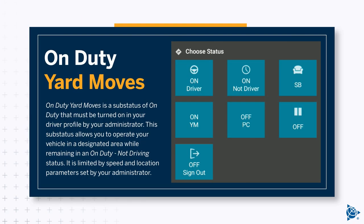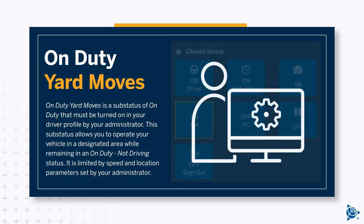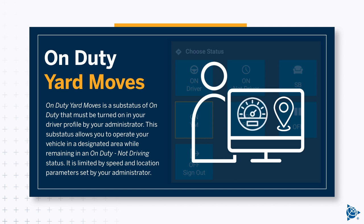On-duty yard moves is a sub-status of on-duty that must be turned on in your driver profile by your administrator. This sub-status allows you to operate your vehicle in a designated area while remaining in an on-duty, not driving status. It is limited by speed and location parameters set by your administrator.